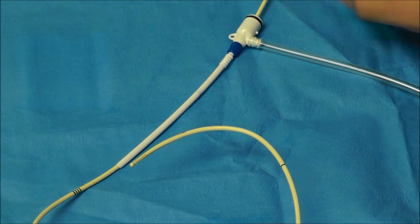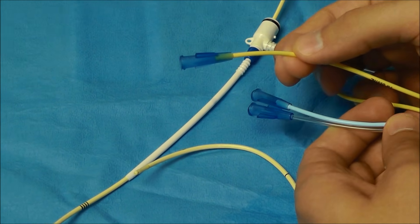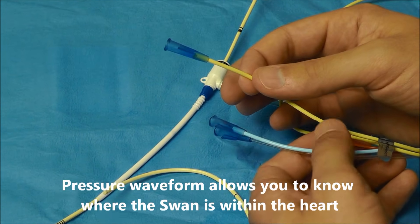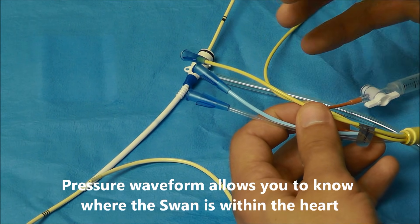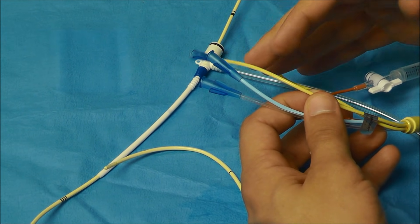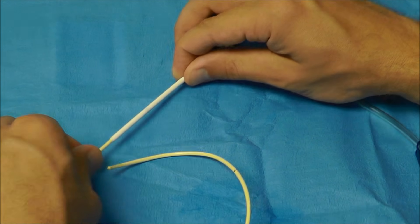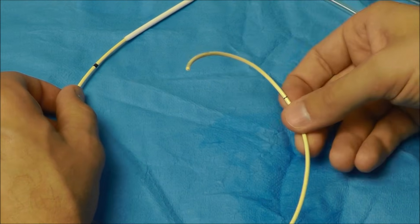you simply just will hook up your Swan-Ganz catheter up here to a transducer tubing, and then you're going to have to watch how the waveform changes as the Swan is guided through the heart. Because the right atrium, the right ventricle, and the pulmonary artery each have a distinct waveform. So if you keep advancing this and all you see is a right ventricular waveform, you're most likely coiled up.